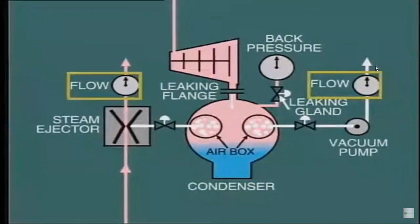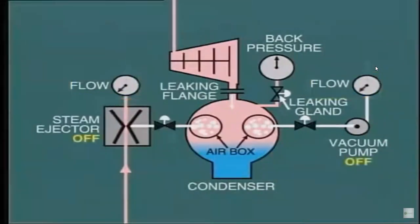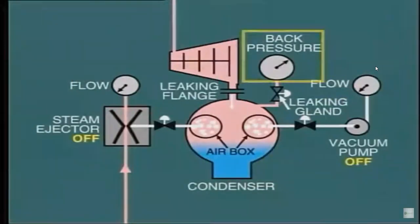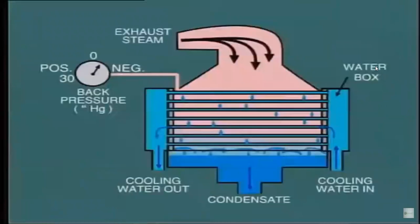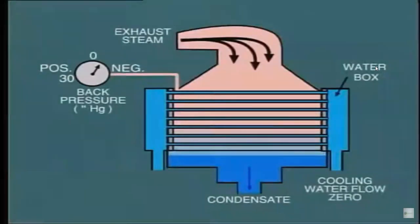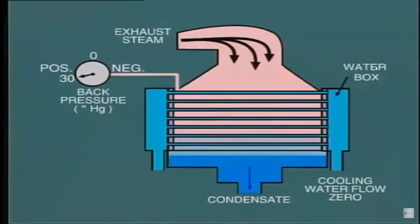A good test during operation is to shut down the vacuum pump or steam ejector and observe the rate at which the back pressure increases. This should be quite slow — say, one inch of mercury in about 30 minutes. Compare this with the change which would take place if all of the circulating water flow were to cease, perhaps due to a trip of the circulating water pumps. In that case, with no condensing taking place at all, the back pressure would rise immediately and the turbine would have to be tripped. In practice, this takes place automatically, and we'll be discussing this when we look at protection devices in the next module.